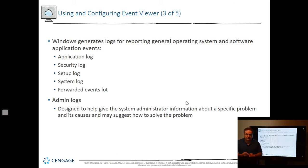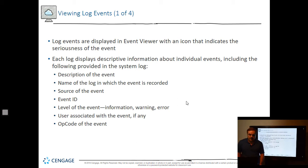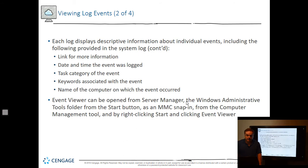Windows generates logs for many different things. Log events are displayed in Event Viewer with an icon that indicates the seriousness of the event — you'll see either a yellow exclamation mark with a yellow triangle, or a red X. If you see a white information-only icon, there's probably nothing wrong; it's just telling you something has happened. Each log displays descriptive information about the event. Once you highlight the event, you can double-click on it to view the details, and sometimes it even gives you ideas on how to fix it, including an error number you can look up on TechNet.